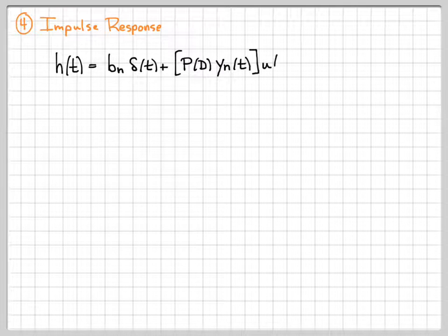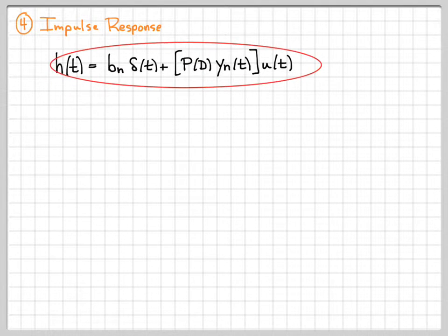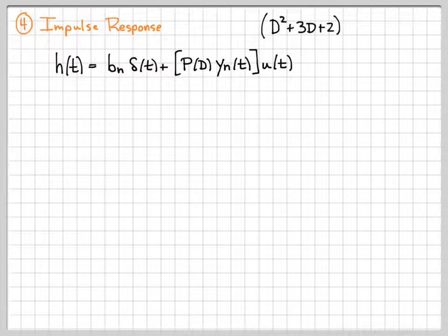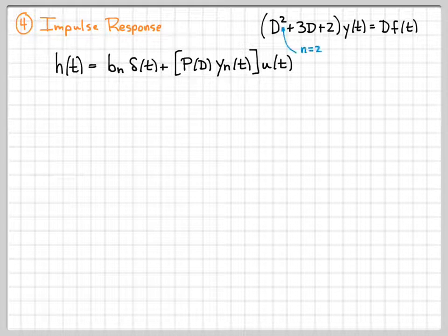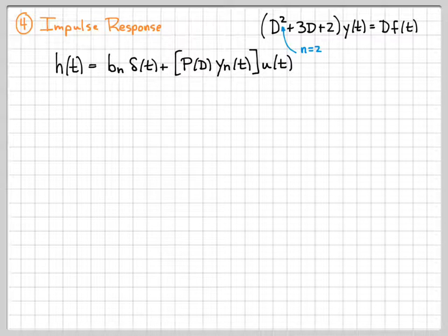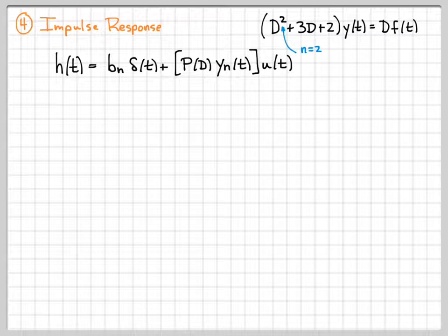Here's the equation that we can always use. The impulse response of a linear system described by a differential equation can be found by evaluating this equation. Recall what our differential equation was — this is a second order differential equation, so n equals 2. Since n equals 2, I need to find the coefficient on the d-squared term on the right side. There is no d-squared term, so b2 is actually equal to zero, meaning I won't have that term.